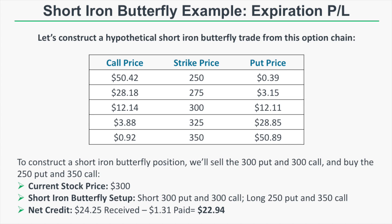Let's construct a hypothetical short iron butterfly from an option chain. With the stock price at $300, we believe it will remain close to $300 over the next X number of days. To construct the iron butterfly, we sell the $300 put and $300 call, then buy the $250 put and $350 call — selling the $300 straddle and buying the $250-$350 strangle, or equivalently selling the 300-250 put spread and the 300-350 call spread. We collect a net credit of $22.94.